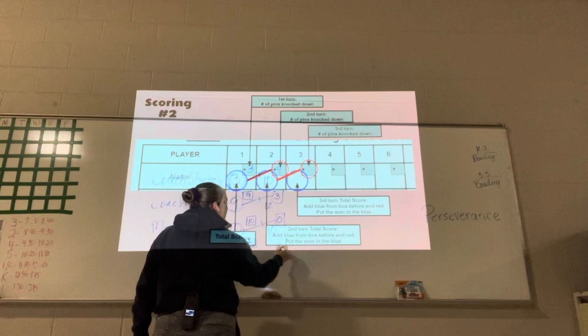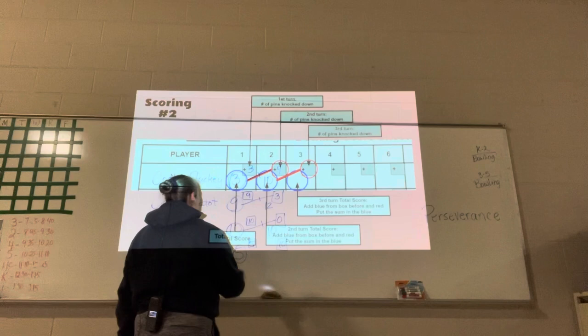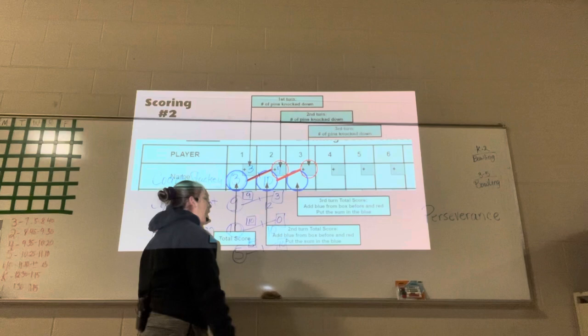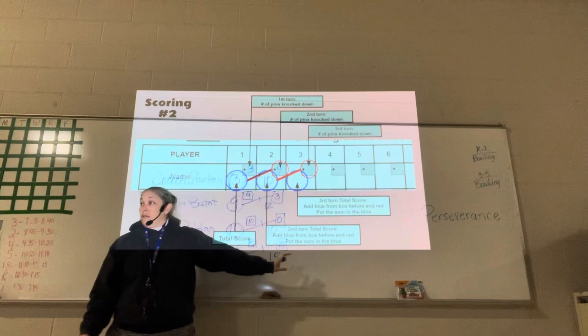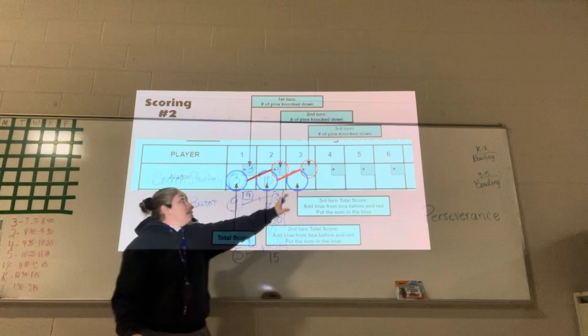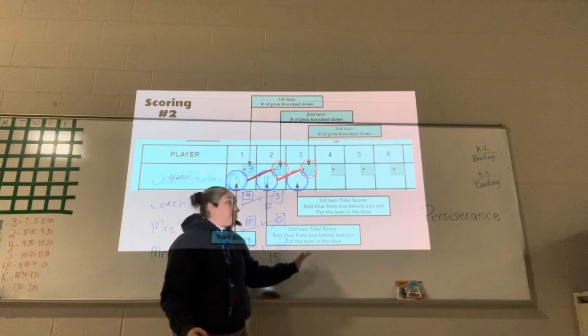And Ms. Garcia, she got lucky. She knocked down all ten. So then we add her score from before, which is five. We add it to the ten, and it gives her how many points? Fifteen. Everyone now has taken two turns. Everyone now has taken two turns. Now we're on our third turn. We come to box three.